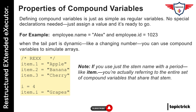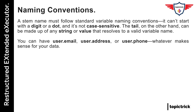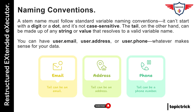Now let's touch on the rules. A stem name must follow standard variable naming conventions — it can't start with a digit or a dot, and it's not case sensitive. The tail, on the other hand, can be made up of any string or value that resolves to a valid variable name; it doesn't even need to be a number. You can have user.email, user.address, or user.phone — whatever makes sense for your data.